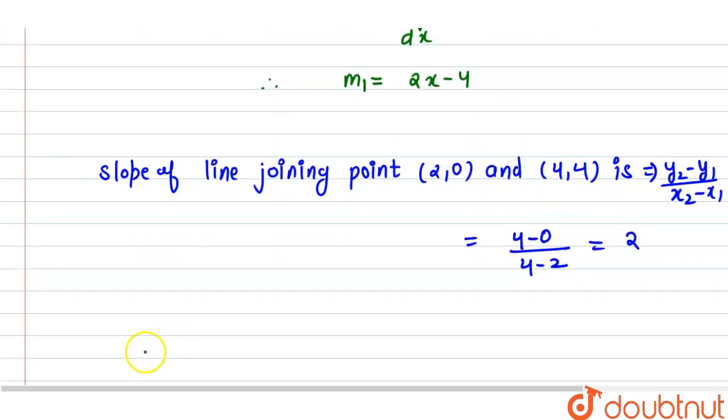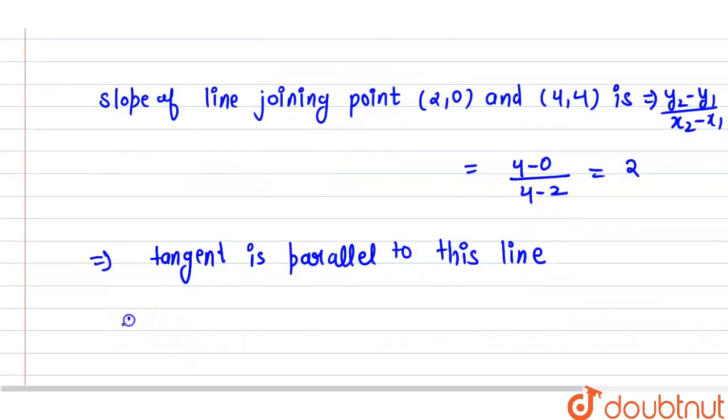Now we say that the tangent is parallel to this line. This implies their slopes are equal. So if their slopes are equal, then 2x minus 4 equals 2. Here m₁ equals m₂, so m₁ equals 2x minus 4 and m₂ is 2.